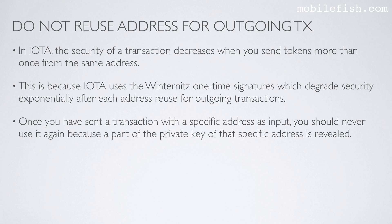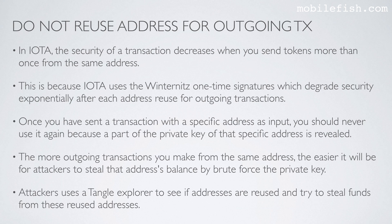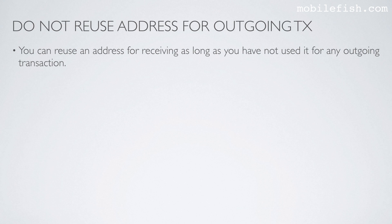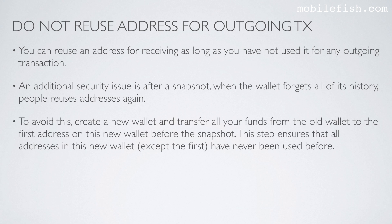Once you have sent a transaction with a specific address as input, you should never use it again, because a part of the private key of that specific address is revealed. The more outgoing transactions you make from the same address, the easier it will be for attackers to steal that address's balance by brute-forcing the private key. Attackers use a Tangle Explorer to see if addresses are reused and try to steal funds. You can reuse an address for receiving as long as you have not used it for any outgoing transaction. An additional security issue is after a snapshot — when the wallet forgets all of its history, people reuse addresses again. To avoid this, create a new wallet and transfer all your funds from the old wallet to the first address of this new wallet before the snapshot.